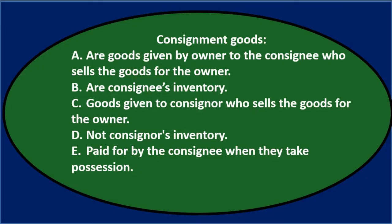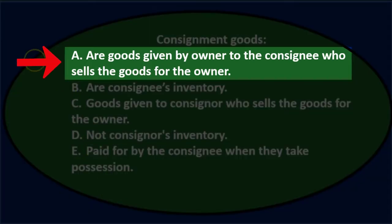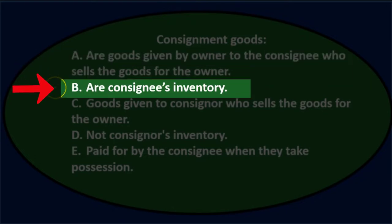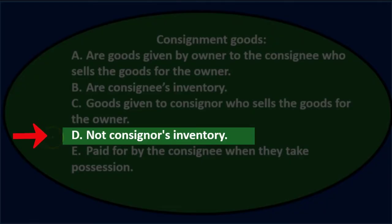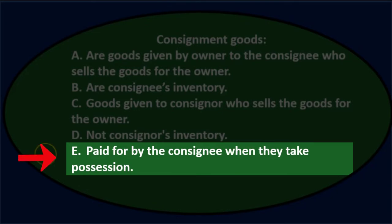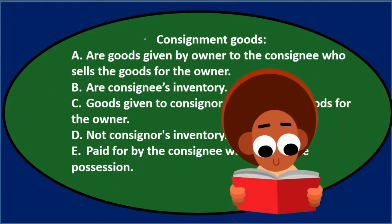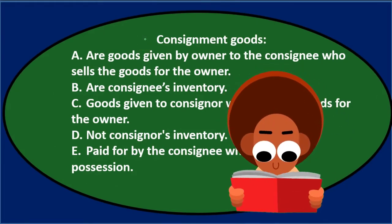First question: Consignment goods. A: Are goods given by owner to the consignee who sells the goods for the owner? B: Are consignee's inventory? C: Goods given to consignor who sells the goods for the owner? D: Not consignor's inventory? E: Paid by the consignee when they take possession? We're going to go through these and see if we can cross out or eliminate some of the options.